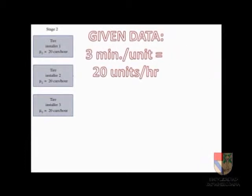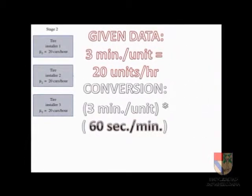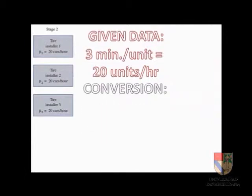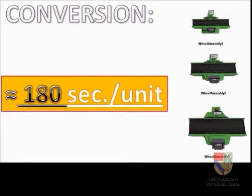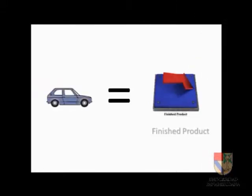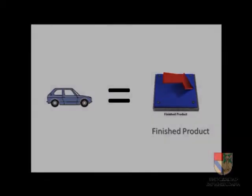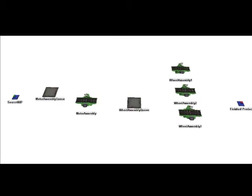Three workers serve at the tire station at a rate of 3 minutes per unit, which is 180 seconds per unit, corresponding to the exponential distribution for each operator at the tire installation. Based on all these data, we construct our model.